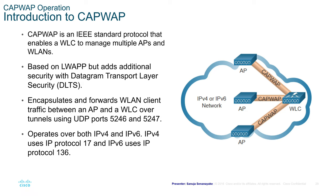CAPWAP is based on LWAPP but adds additional security with Datagram Transport Layer Security, also known as DTLS. CAPWAP encapsulates and forwards WLAN client traffic between access point and WLC over tunnels using UDP ports 5246 and 5247. It operates on both IPv4 and IPv6 — using IP protocol 17 for IPv4 and IP protocol 136 for IPv6.